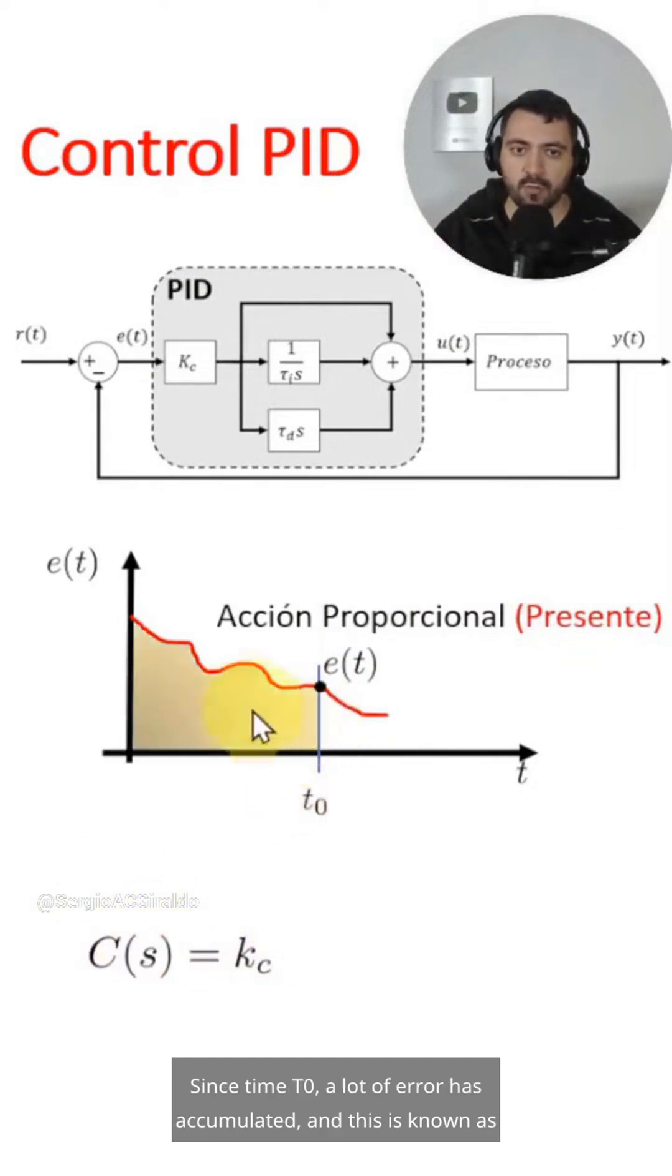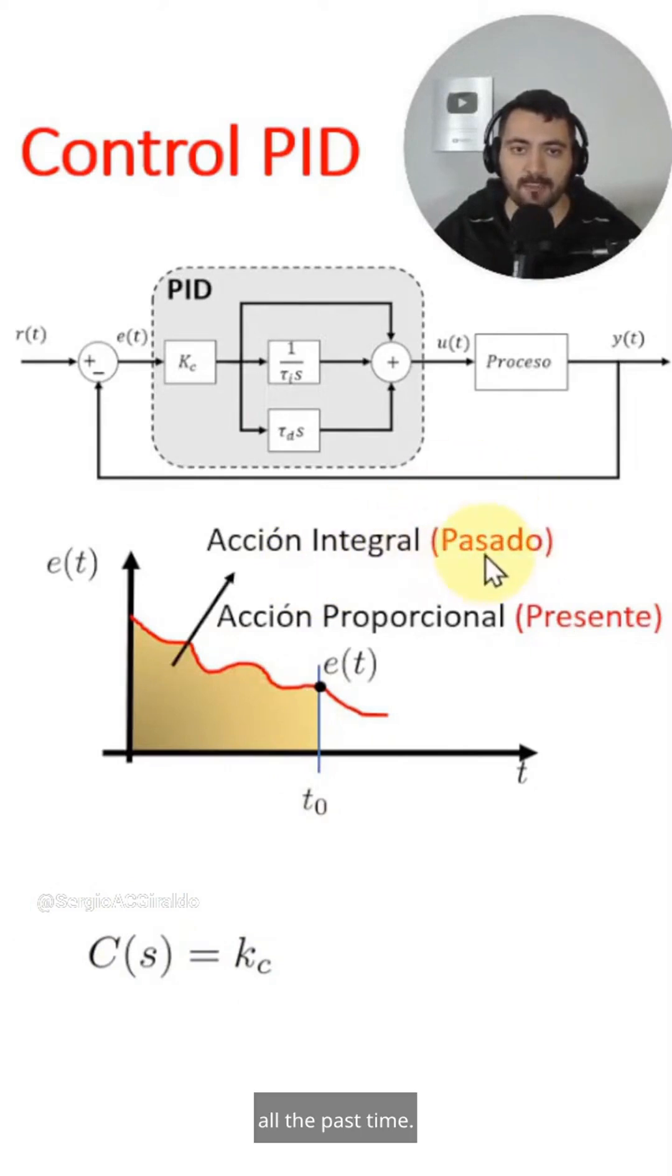Since time t0, a lot of error has accumulated, and this is known as all the past time. This is where the integral action comes into play.